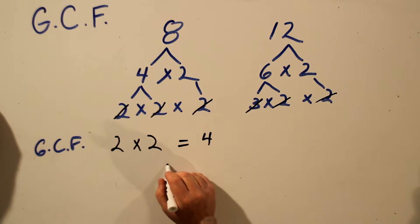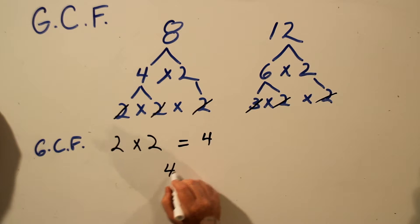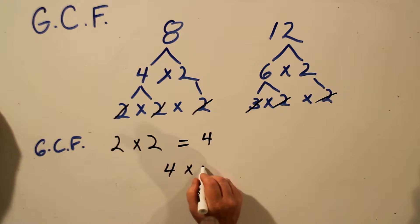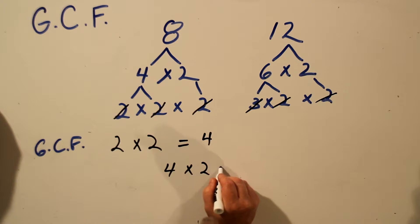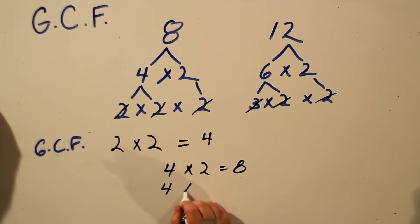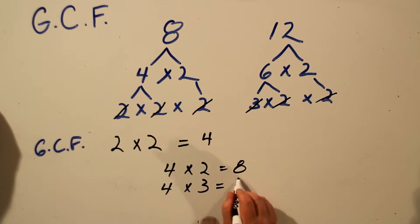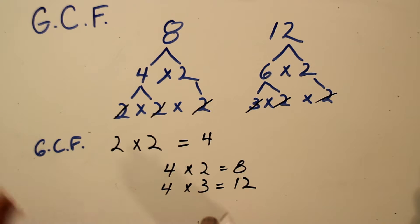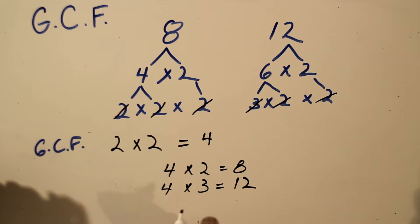And to check that: 4 times 2 is 8, and 4 times 3 is 12. In fact, 4 is the greatest number that is common to both 8 and 12, so it's the greatest common factor.